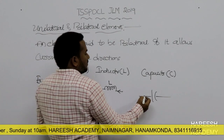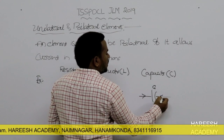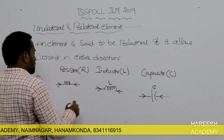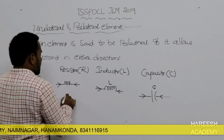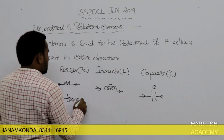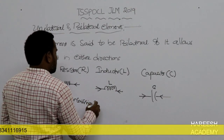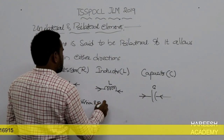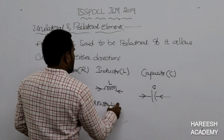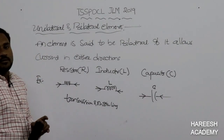This is also a bilateral element. The capacitor allows current in two directions. Another example is transmission and distribution lines, which are also bilateral elements.